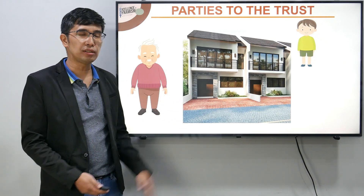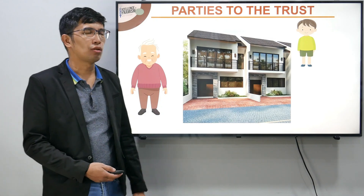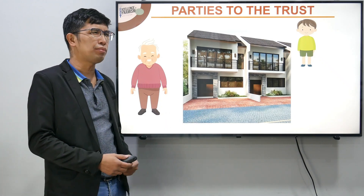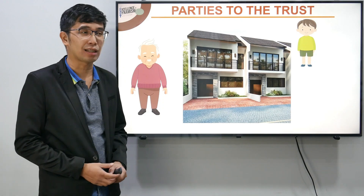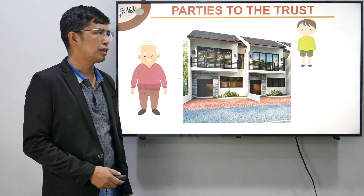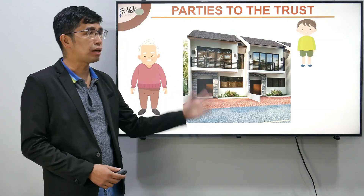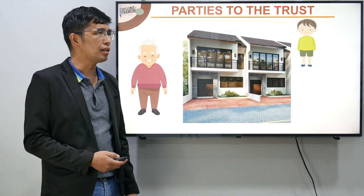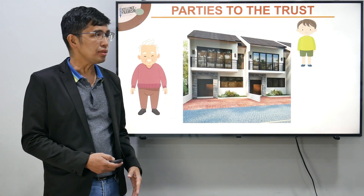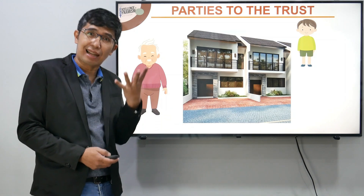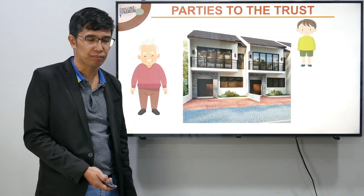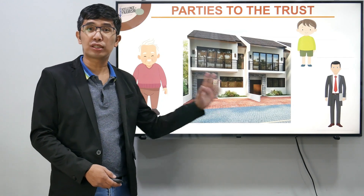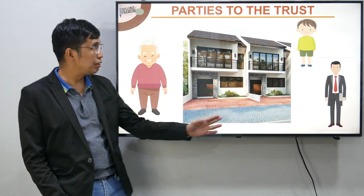Itong si grantor ay medyo matanda na rin, so kung kaya man niya, medyo ayaw na niya mag-stress. Ang basta hangarin lang niya is ibigay itong pag-aari niya sa isa sa kanyang mga apo. So in that case, instead na ibigay directly yan sa apo niya, pwedeng ipagkakatiwala niya muna — kaya na trust eh, tiwala — itong property niya sa ibang tao na tinatawag nating fiduciary or trustee, for the benefit ng apo niya.